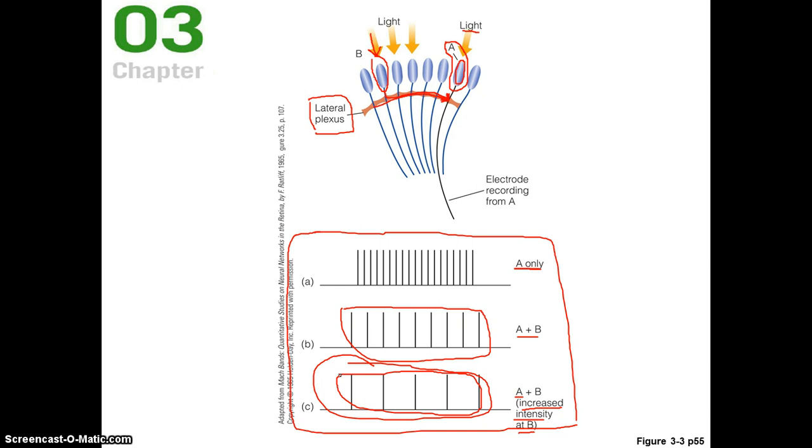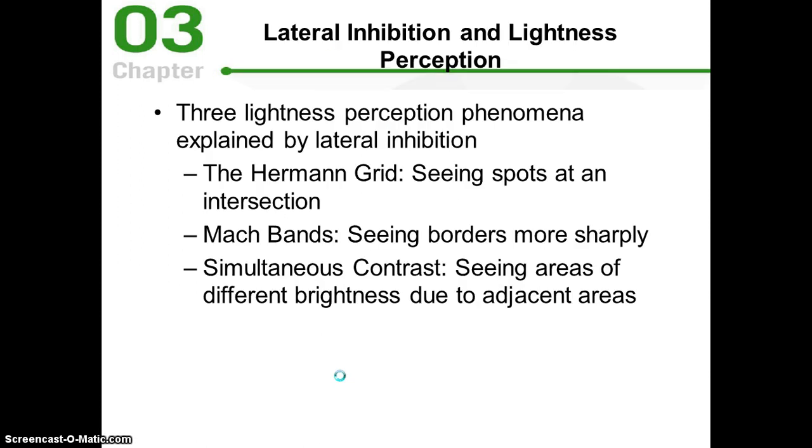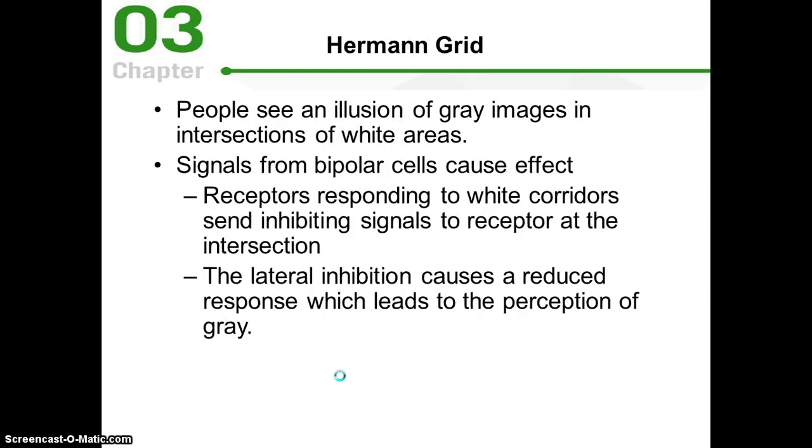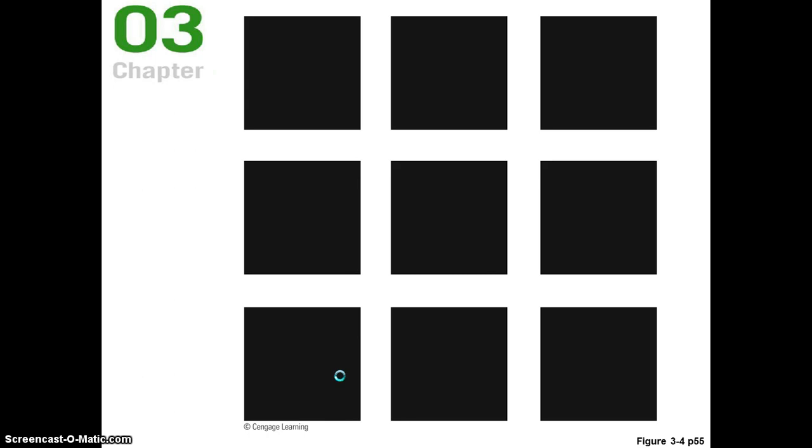So this is lateral inhibition. This is important because this phenomenon isn't isolated just to the horseshoe crab. Otherwise, we really wouldn't care too much about it if that were the case. It exists in humans as well, and it actually explains some interesting phenomena, some interesting illusions. This is one that I showed in a previous video. It's called the Hermann grid, where the illusion here occurs precisely because of the organization of the human retina.